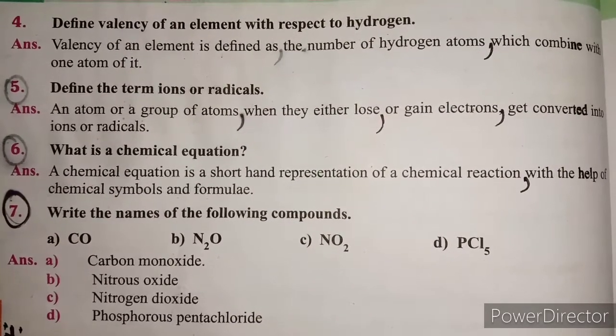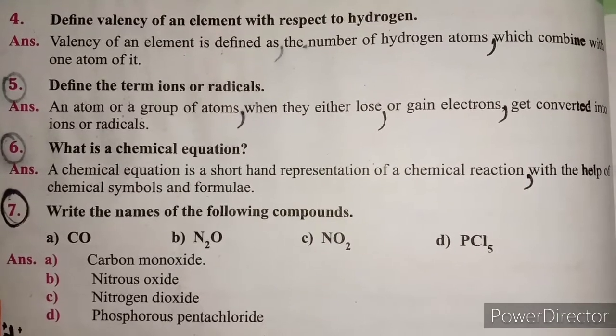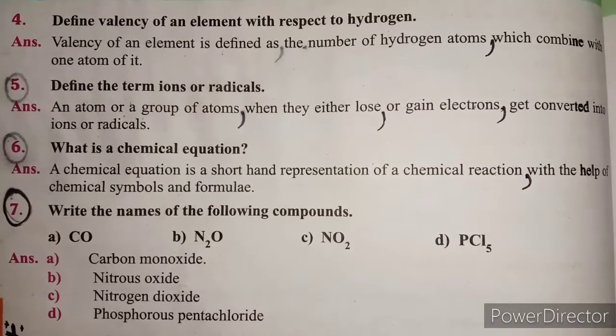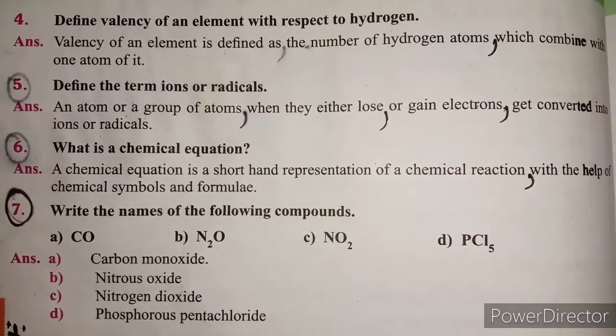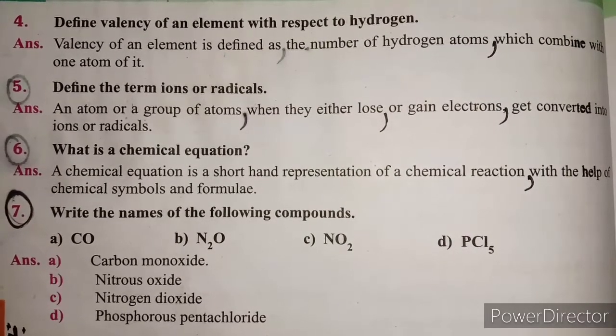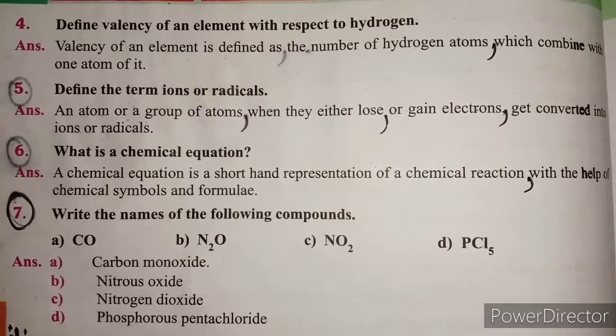Question 6: What is a chemical equation? A chemical equation is a short-hand representation of a chemical reaction with the help of chemical symbols and formulas.